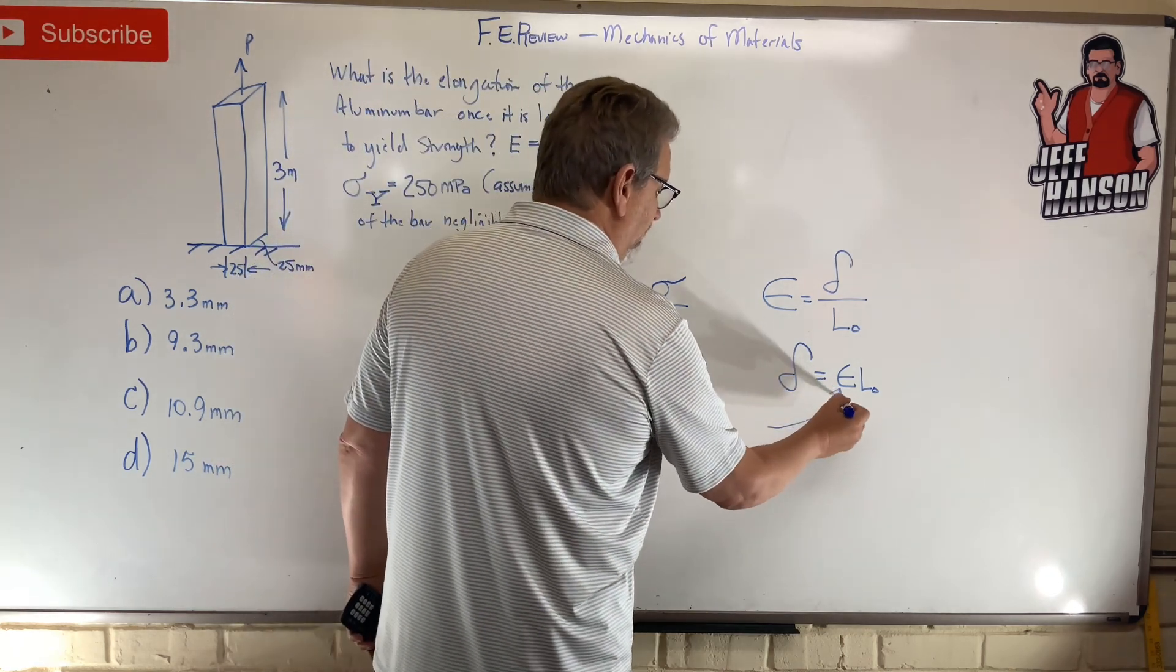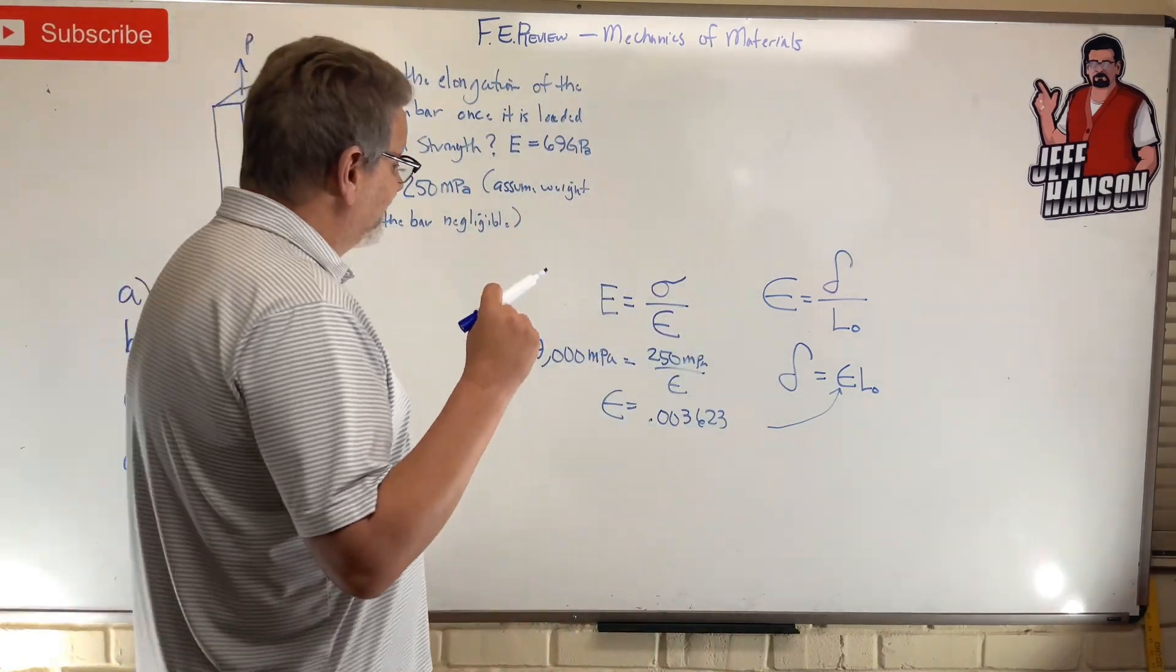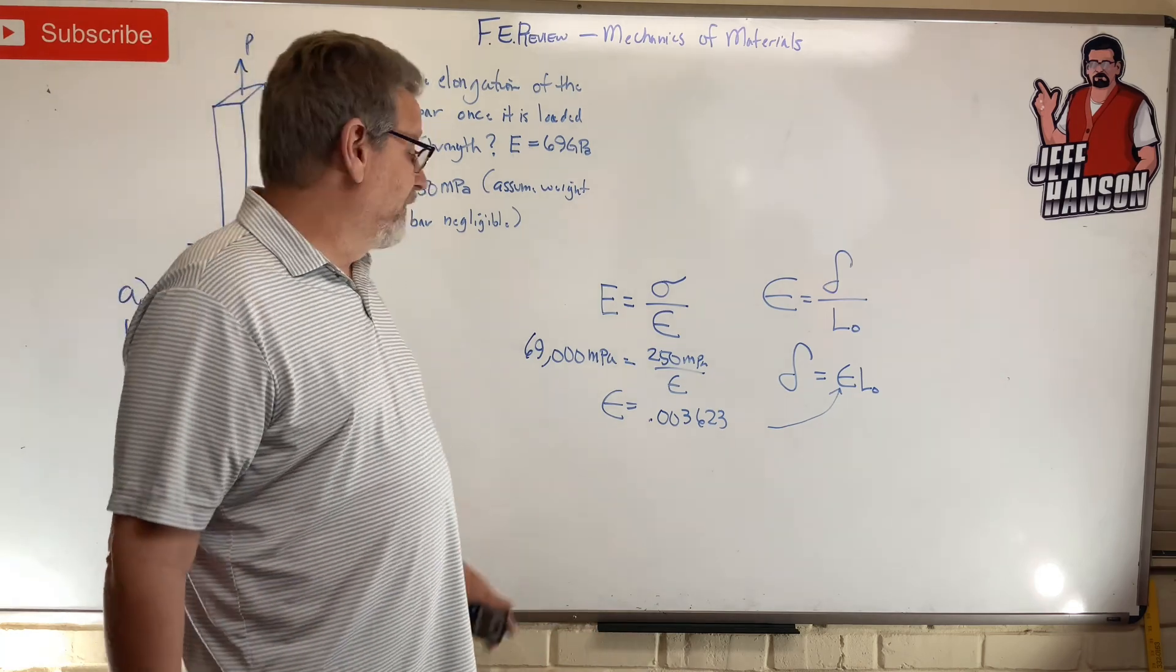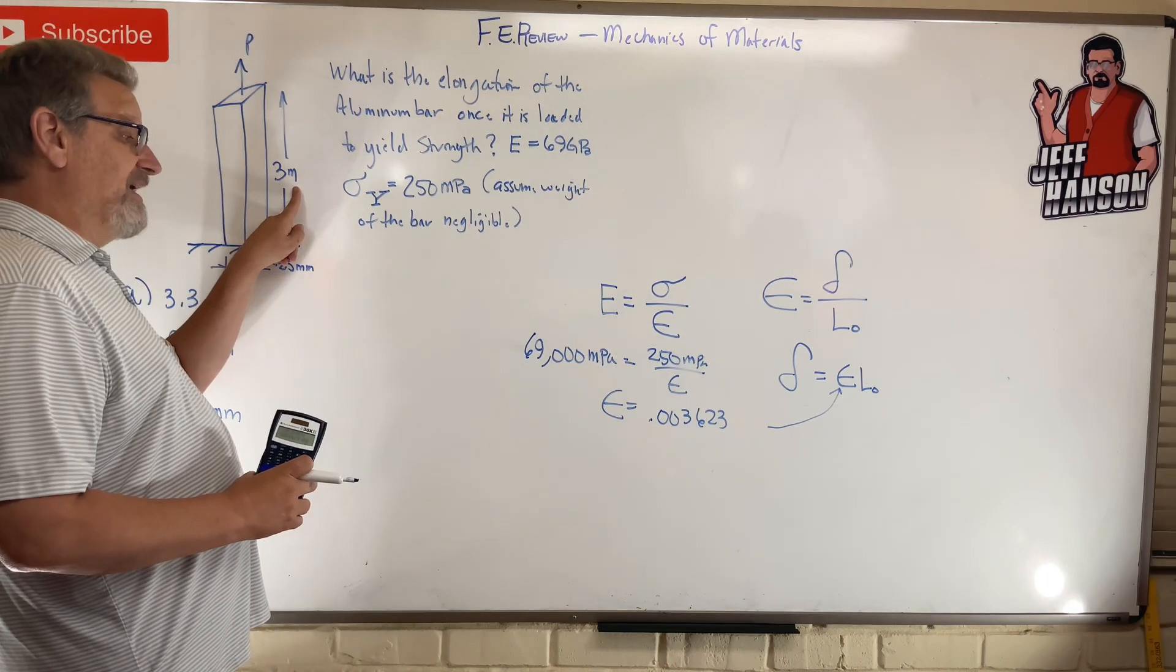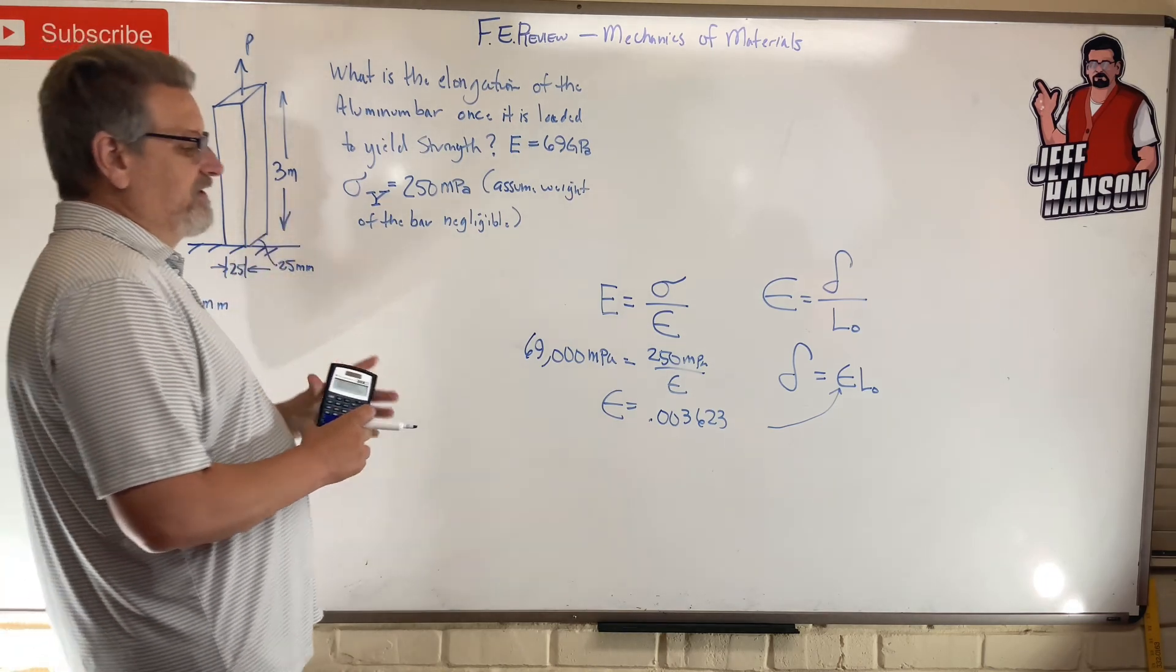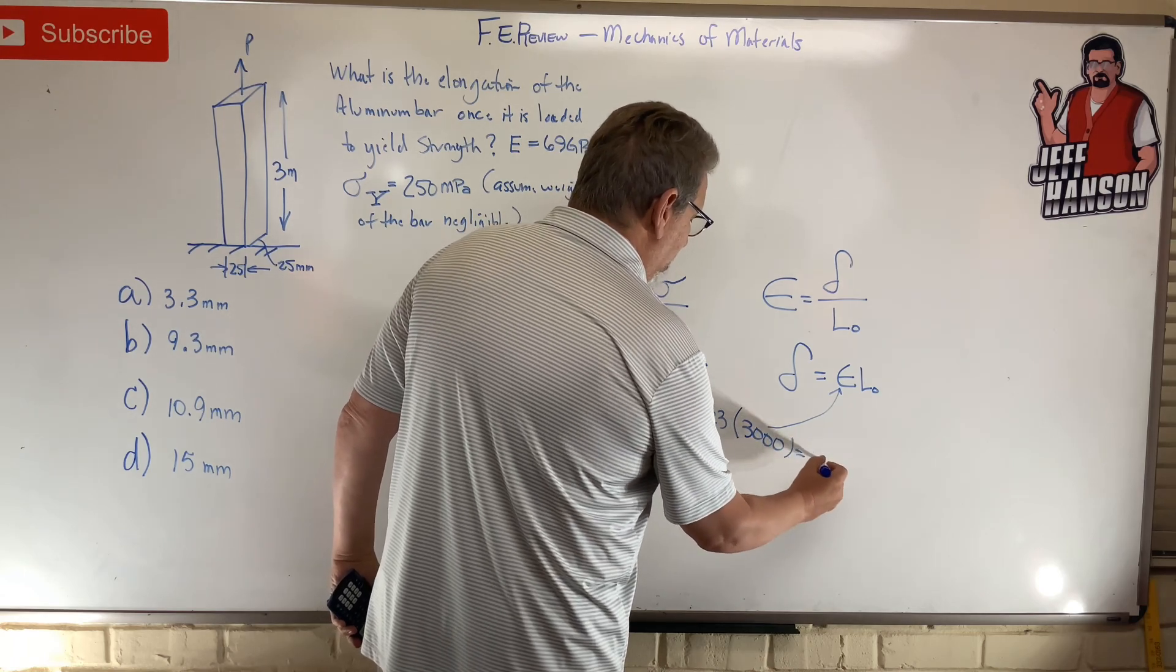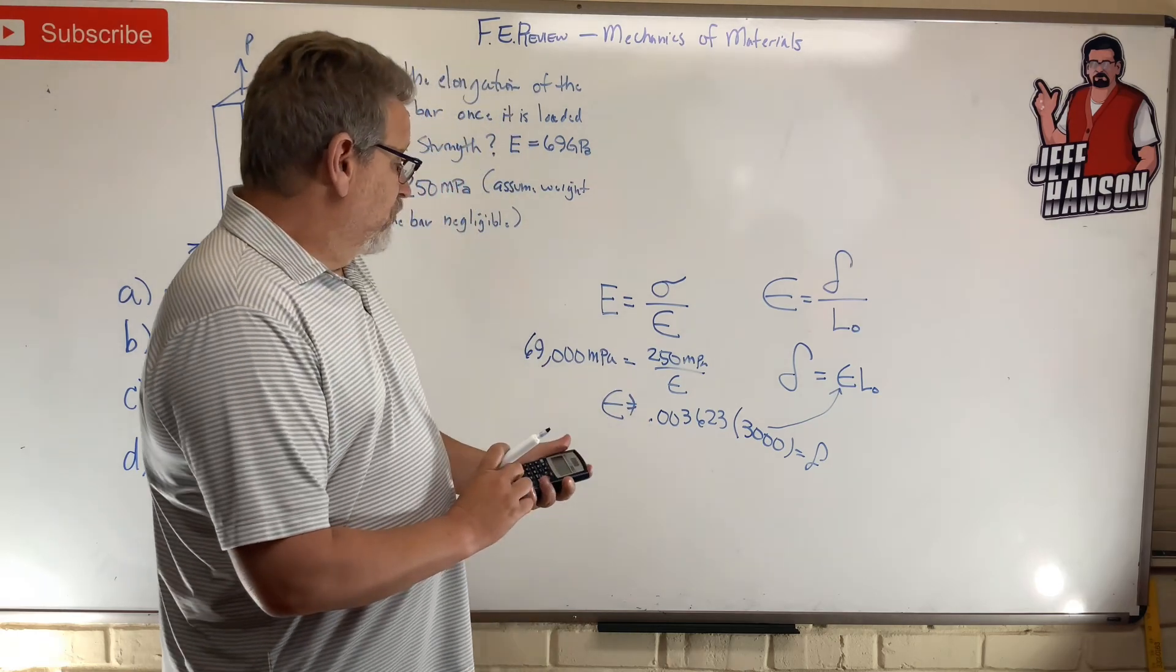And multiply it by the original length. Now it's going to be a little bitty thing. Don't do it in meters because that's going to be a little number. Let's do it in millimeters. So the original length here is three thousand. Okay, so times three thousand is going to give me that delta there, right?